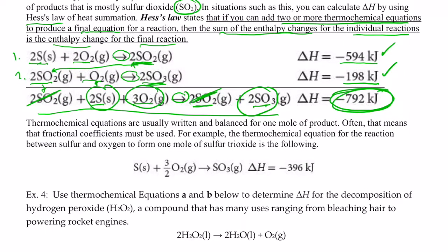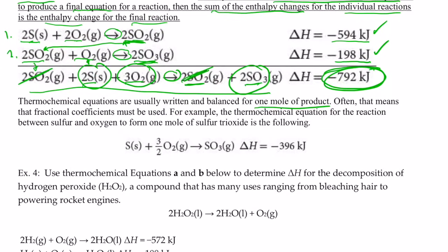Now, the thermochemical equations are usually written and balanced for one mole of product. That's what we're used to, folks. Often that means that fractional coefficients must be used. For example, the thermochemical equation for the reaction between sulfur and oxygen to form one mole of sulfur trioxide would be the following. So if I only wanted to make one mole of product, I'd cut that in half, and then I would cut this in half, and I would cut this in half.